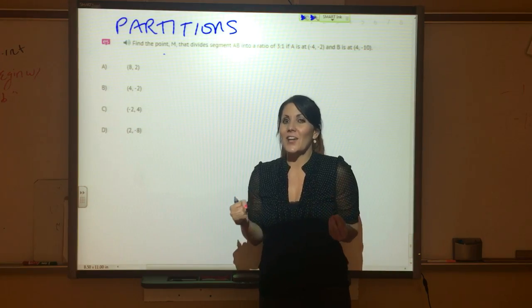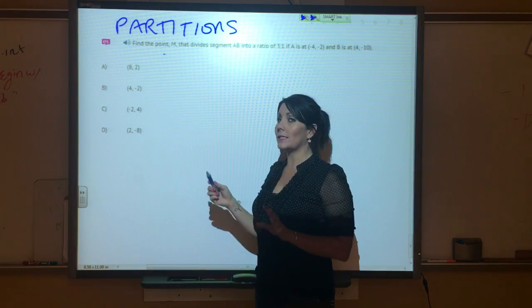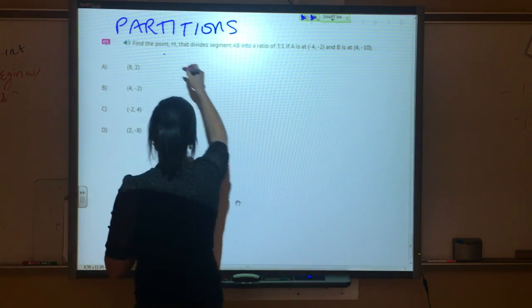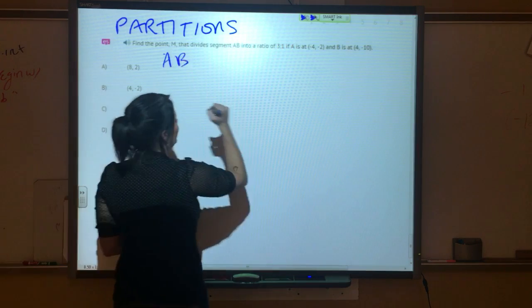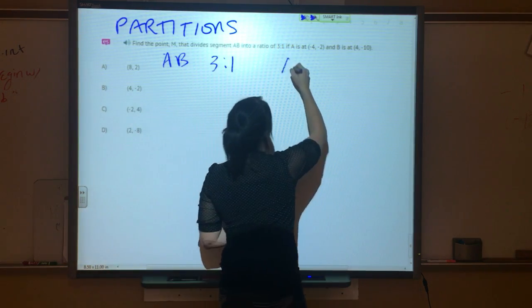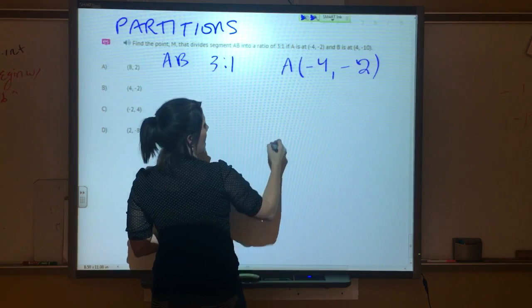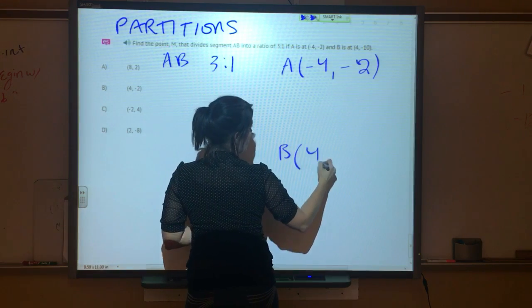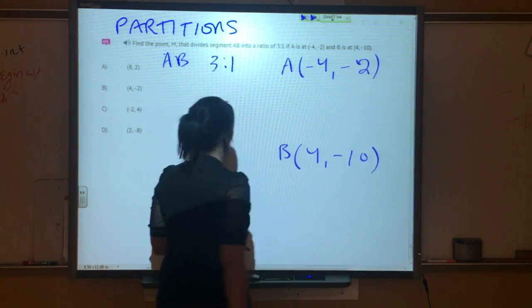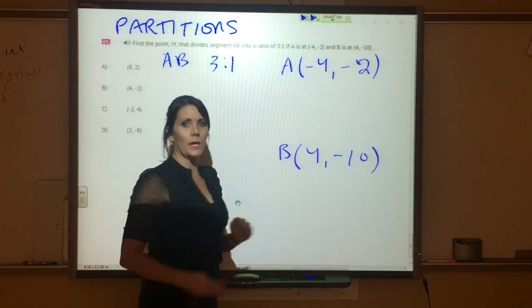About partitions in geometry. On this problem here, it's asking us to find the point M that divides segment AB into a ratio of 3:1, if A is at (-4, -2) and B is at (4, -10). Notice when I wrote this I left a lot of space in between and I wrote them vertically.